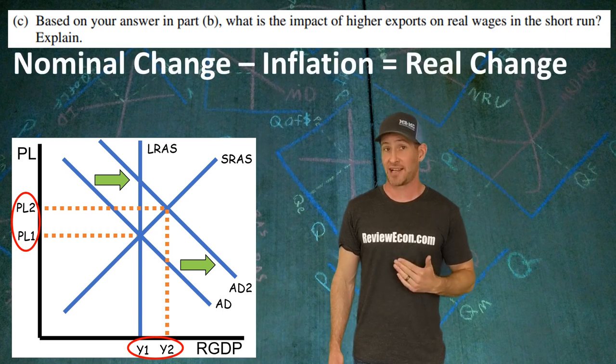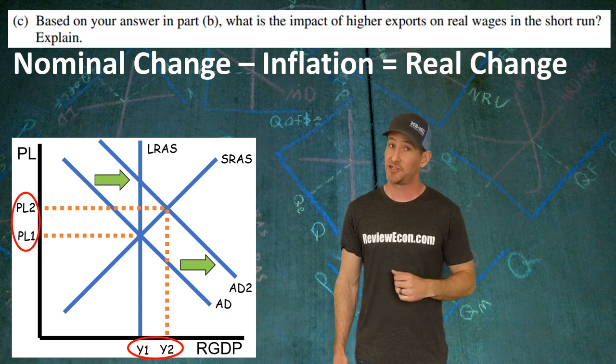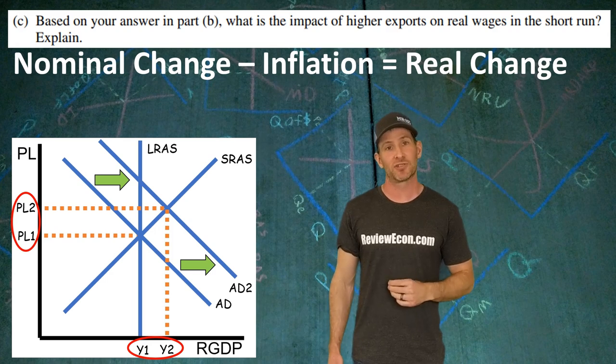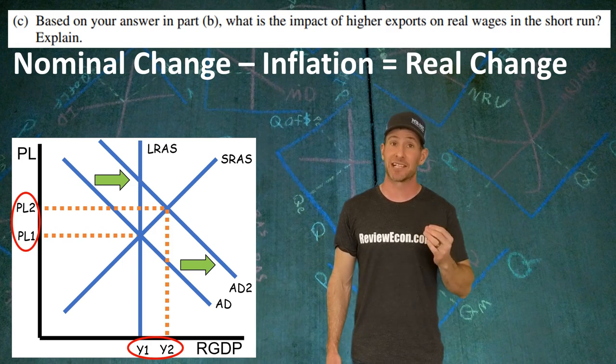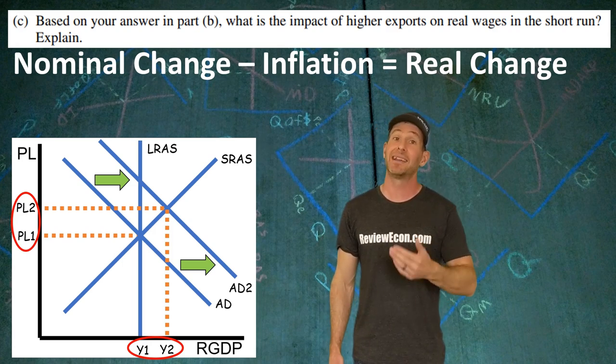To calculate the change in real wages, we need to take the nominal change, which is zero, minus the inflation rate. And we do have some level of inflation because the price level increased in Part B. And that equals the real change. In this case, it's a negative real change. Zero minus some positive number will equal a negative number.